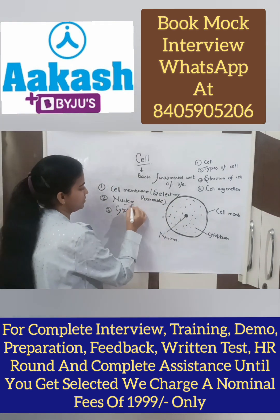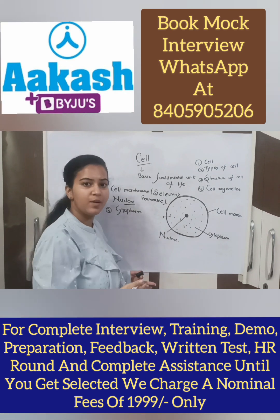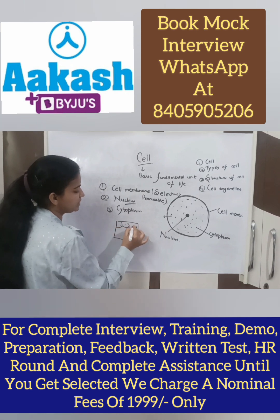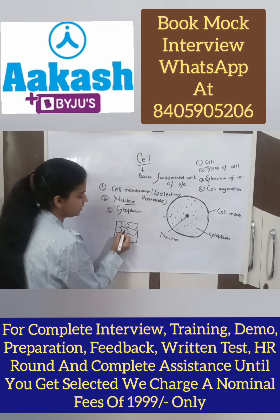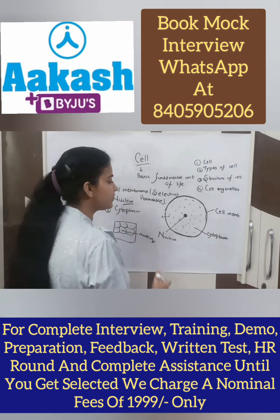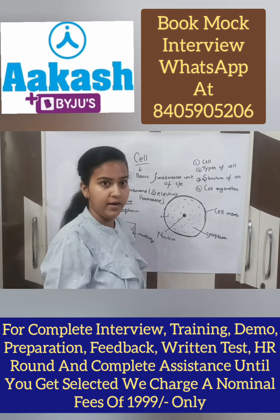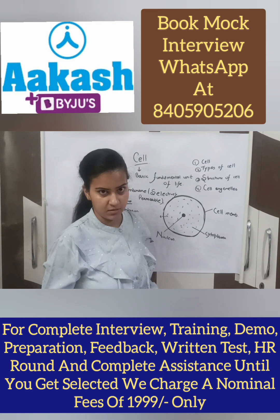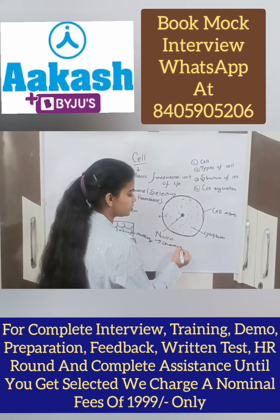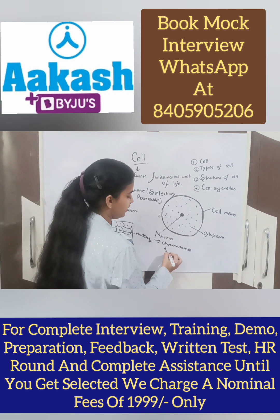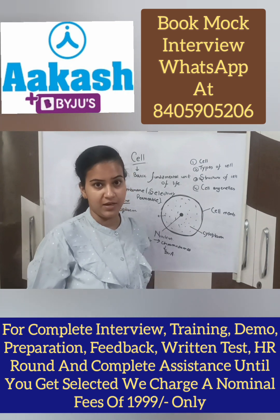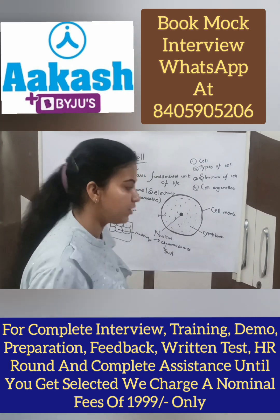Now we will study about the nucleus. Students, do you remember the activity we did with the onion? In those structures we observed under the microscope, we can see a dot in the center — this dot-like structure is known as the nucleus. The nucleus further contains chromosomes, and chromosomes further contain DNA. DNA is the material which passes from one generation to the next. Chromosomes are rod-shaped structures which contain DNA.